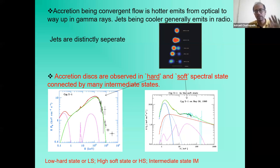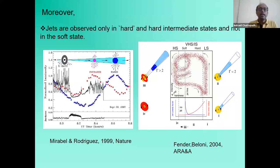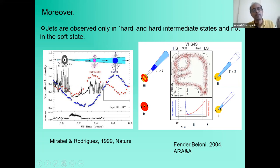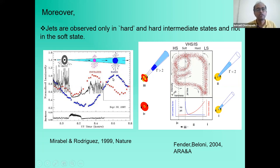Jets in microquasars are seen only in hard or hard-intermediate states, not in the soft state — so jet states are correlated with accretion states. This was shown in the famous Mirabel and Rodríguez 1999 Nature paper. At that time it was a big deal; now Astrosat has much better and longer light curves.